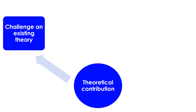The first path is to challenge an existing theory. You read literature and find something amiss, so you challenge an existing theory without proposing a new theory. Compared to developing a new theory that upends an old theory, this path is a gentle approach to theoretical contribution.